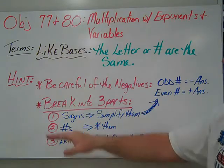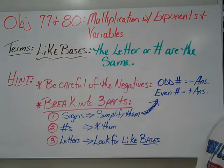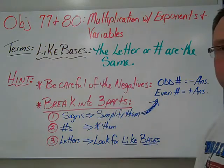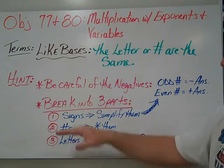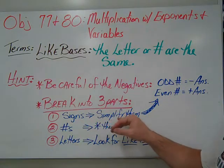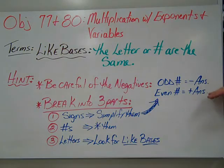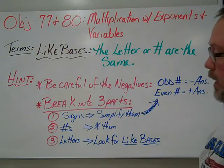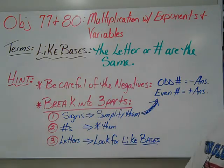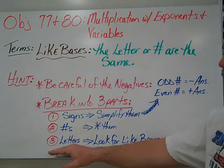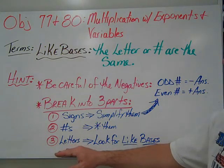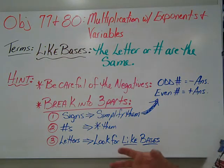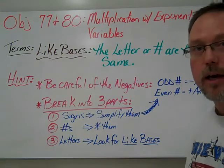The other thing that will make it easier is to break it into three parts. The first part is signs — simplify them using those two rules: odd number negative, even number positive. Second, multiply the numbers. Third, look for your like bases — those are the ones you can combine — and take care of the powers as you go.